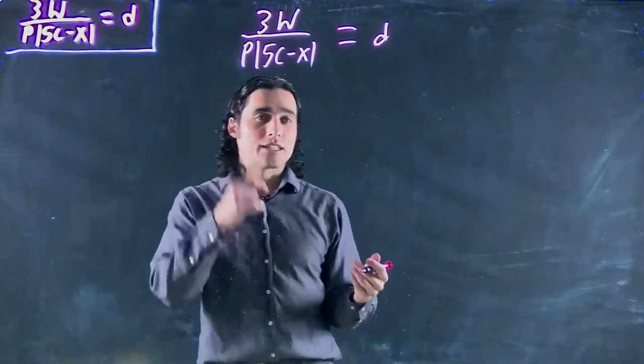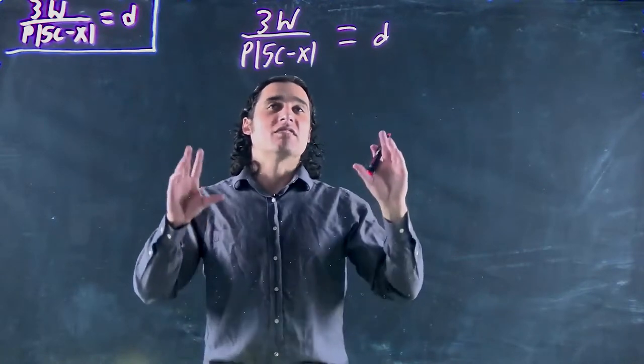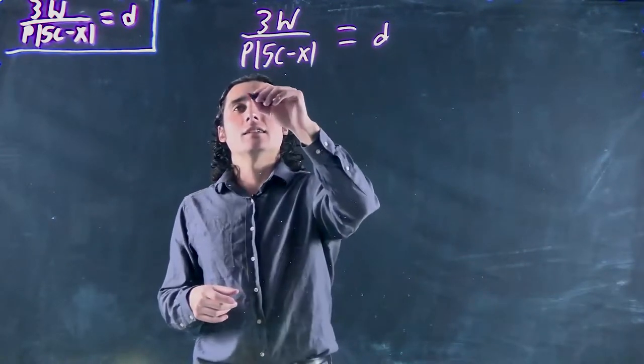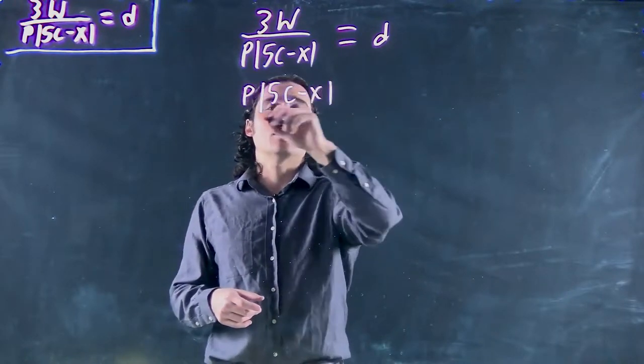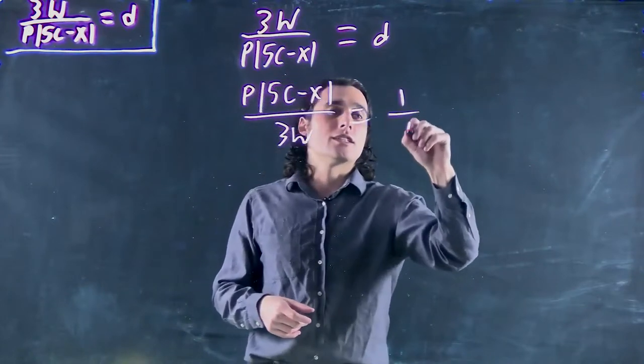Great. Well, want to get the absolute value on its own, where easy trick is to flip or invert both sides. So p times absolute value of 5c minus x all divided by 3w equals 1 over d.